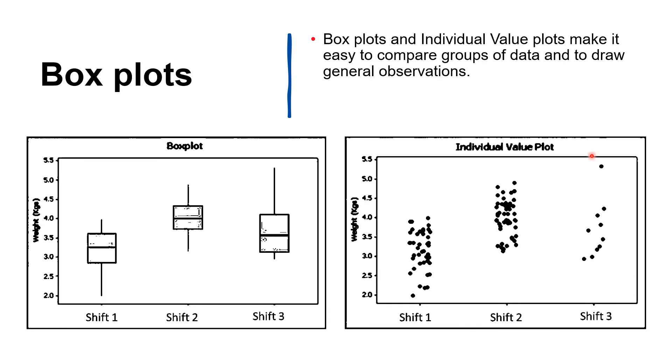This heavy sample has caused the large range in Shift 3. So in summary, box plots and individual value plots can be used to compare groups of data and to make general observations. Care should be taken to check how much data is contained within each group before any observations are made.